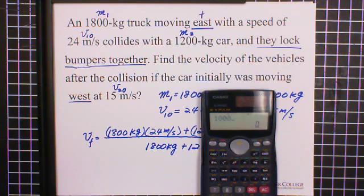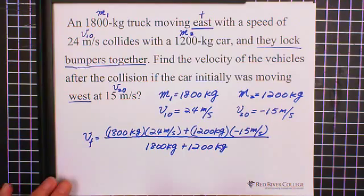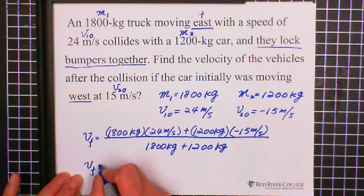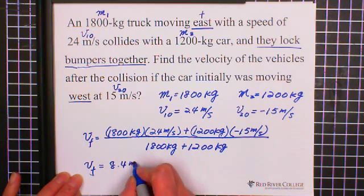Then we can calculate. 1800 times 24 plus 1200 times negative 15 divided by 1800 plus 1200 equals, V final equals 8.4 meter per second.